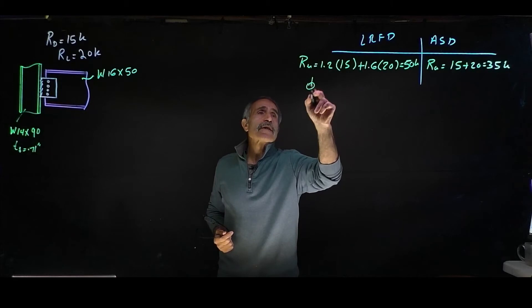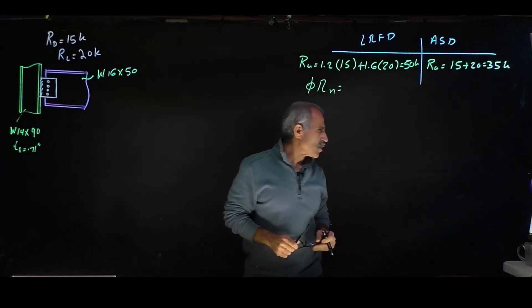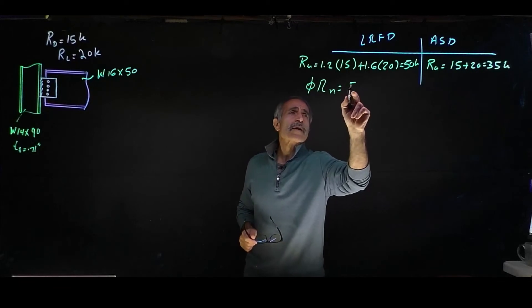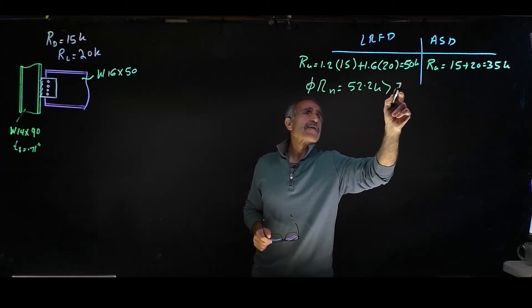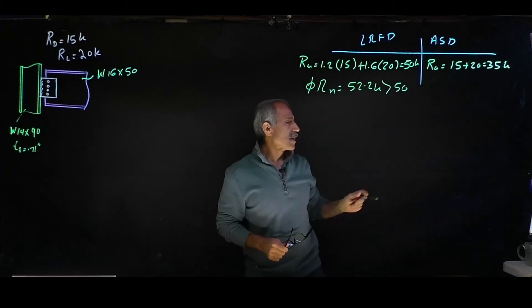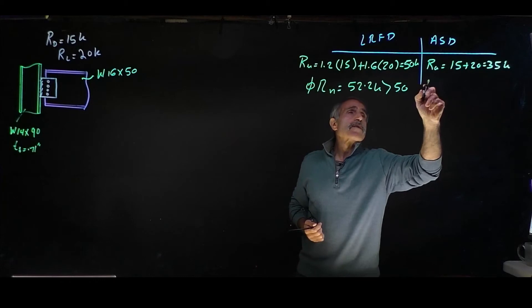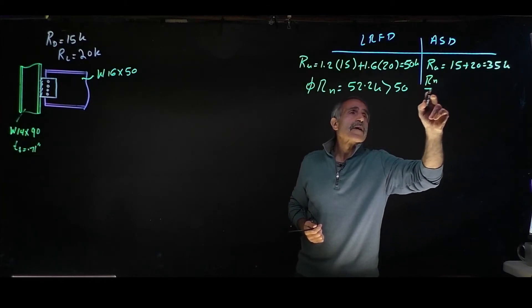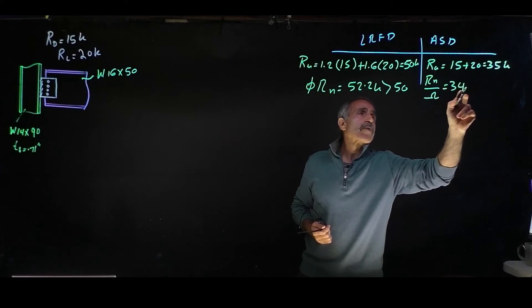We have phi times Rn came out to 52.2 kips, which is bigger than 50. And in ASD we have Rn divided by omega came out to 34.8 kips,